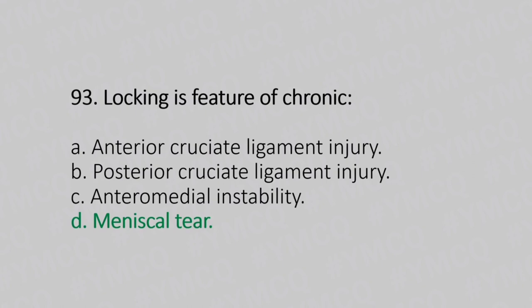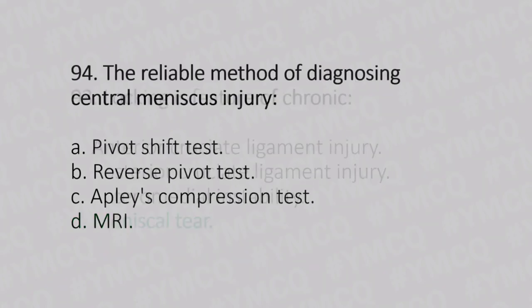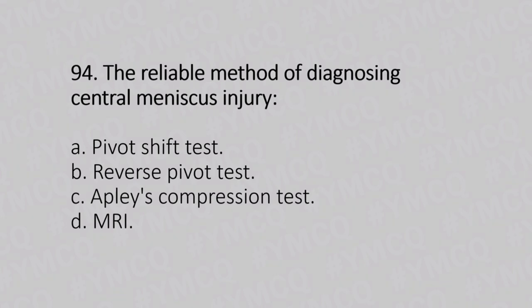Now let's move to question number 94. The reliable method of diagnosing central meniscus injury. Option A: pivot shift test. Option B: reverse pivot test. Option C: Apley compression test. Option D: MRI. And the answer is Option D, MRI.